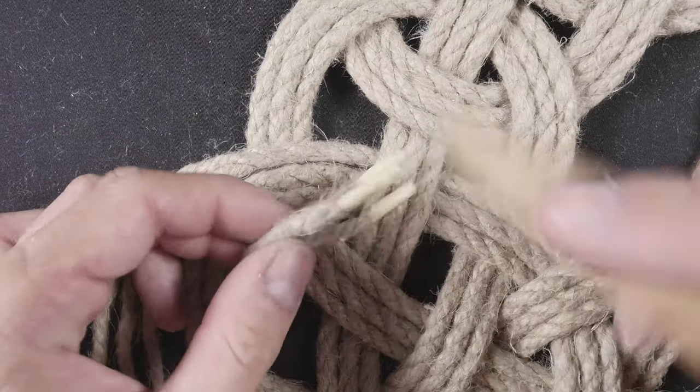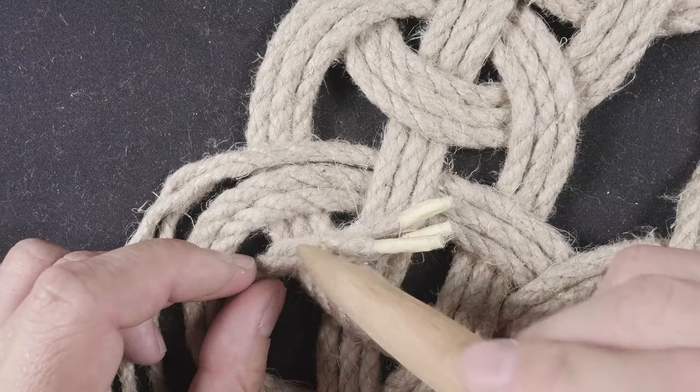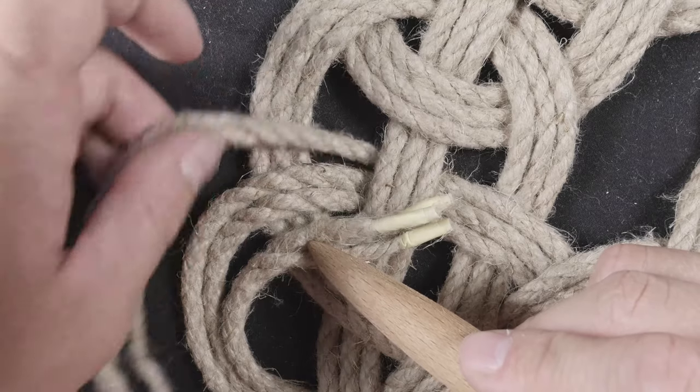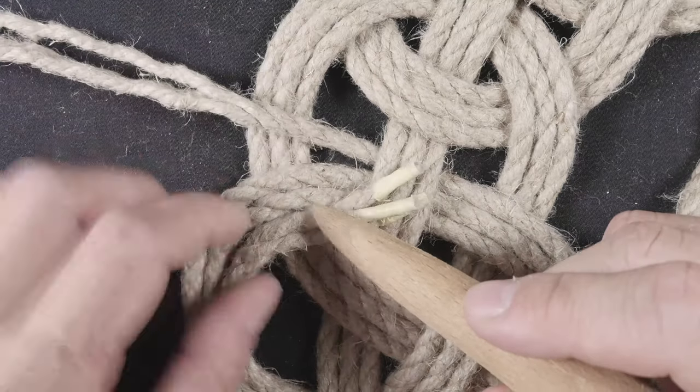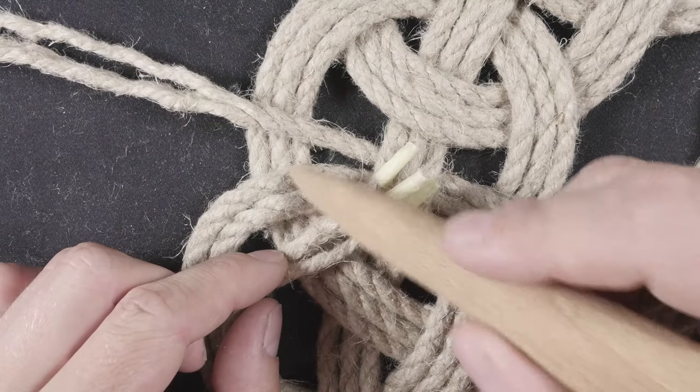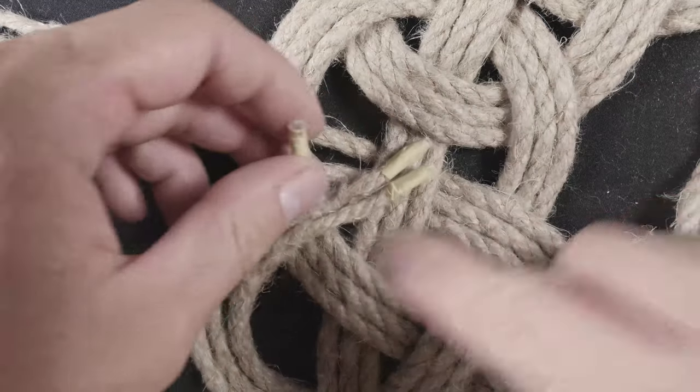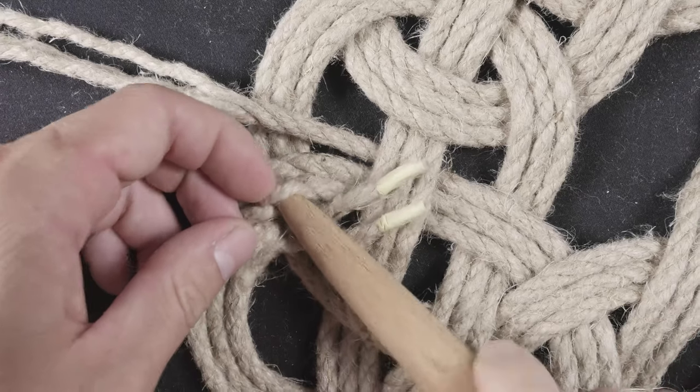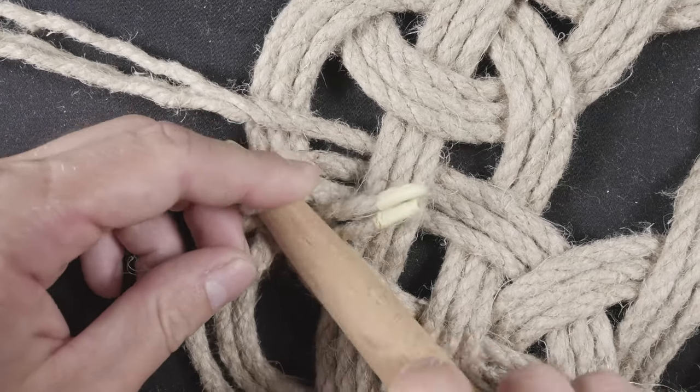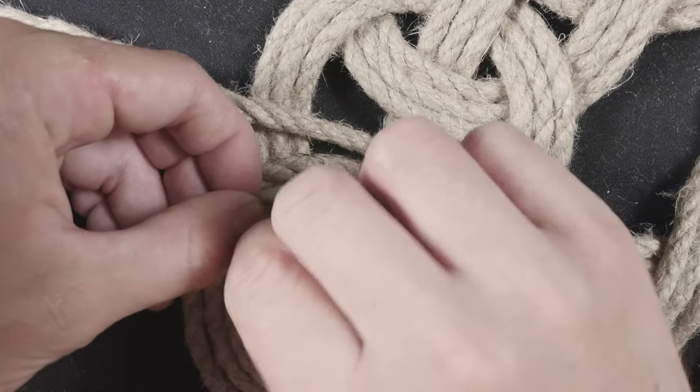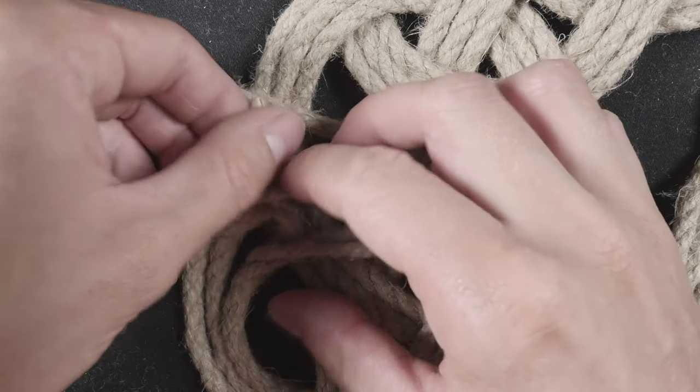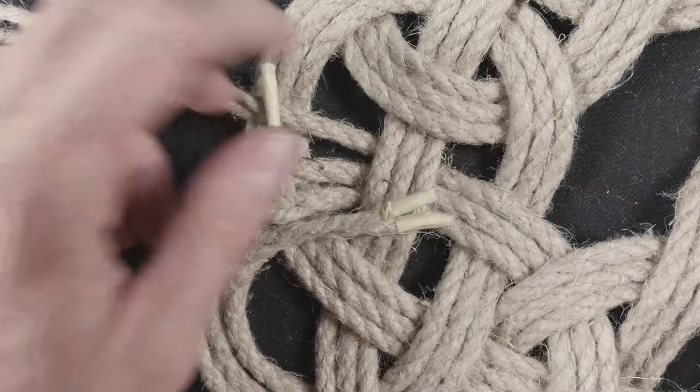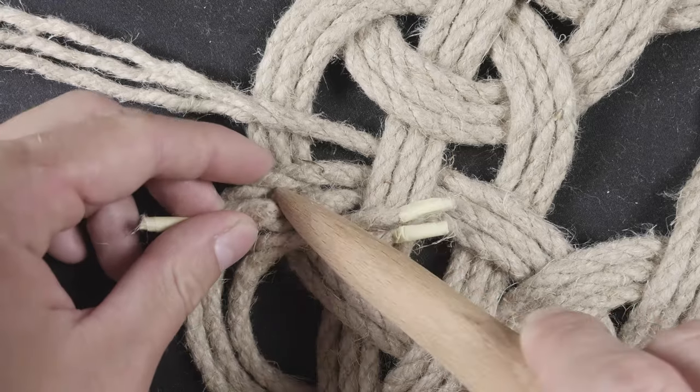First, the three strands on the bottom. We're going to work them through the two passes in the mat. First, start with the leftmost strand, work it through the first pass, and through the second pass.